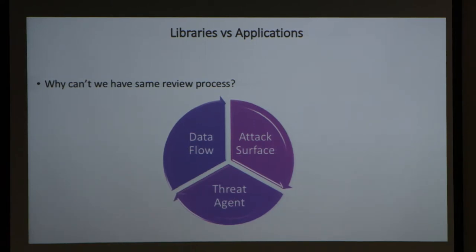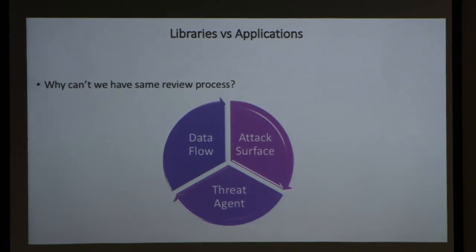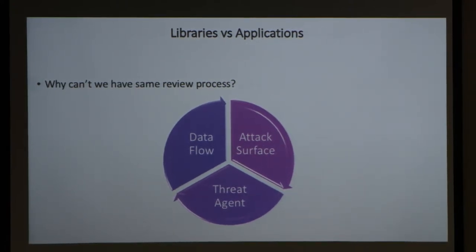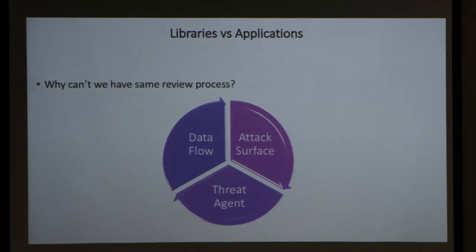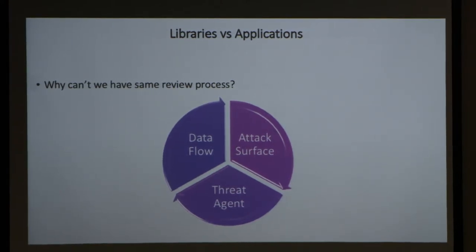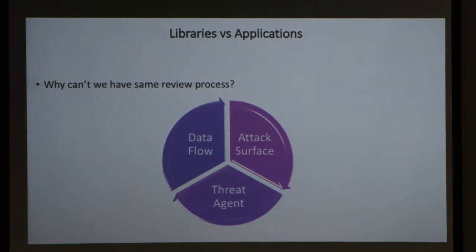For example, consider OpenSSL on an Android phone — OpenSSL in application space versus OpenSSL in kernel space. The attack surface is different. When OpenSSL is used by an application, I'm more worried about application-level threats: web application issues, SQL injection, cross-site scripting, privilege escalation. When OpenSSL is used in the kernel, my threats are different — I want to see how to take complete control over root. That's why we can't use the same method for library evaluation that we use for applications.